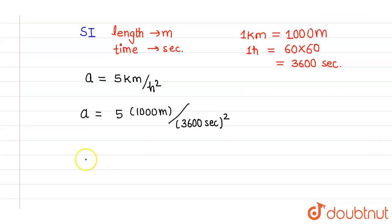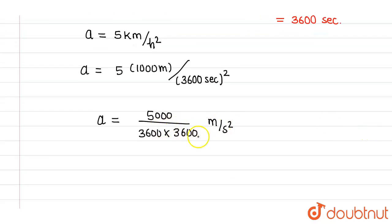Now, if I solve this, I will be getting acceleration as 5000 divided by 3600 meter per second square. Now, for solving this, this two zeroes will cancel out with this, and this one zero will cancel out with this.